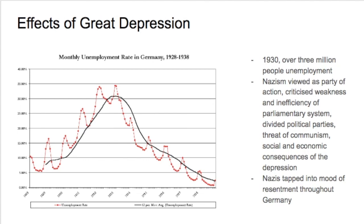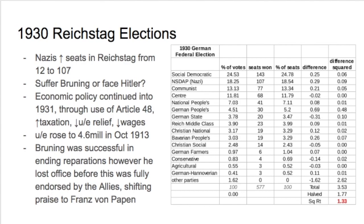Most importantly, the Nazis tapped into the mood and resentment. Germans during the 1930s wanted change, they looked for a bright future — salvation — and that's what Hitler promised them. The Reichstag elections in 1930 are pivotal for Hitler and the Nazi Party. They go from 12 seats to 107.